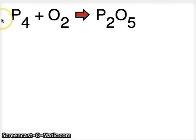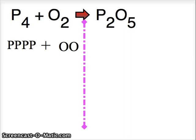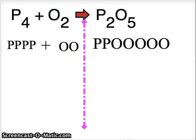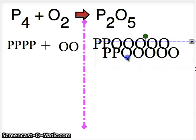If you're given P4 plus O2 makes P2O5. Again, first thing we do is write everything out as individual atoms. PPPP plus OO makes PPOOOOOO. Start your comparison. Four phosphorus, two phosphorus. So I have to duplicate this.